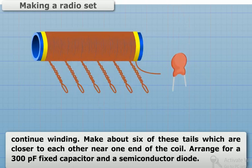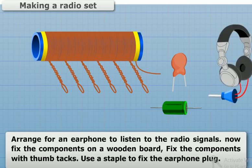Arrange for a 300 pF fixed capacitor and a semiconductor diode. Arrange for an earphone to listen to the radio signals.